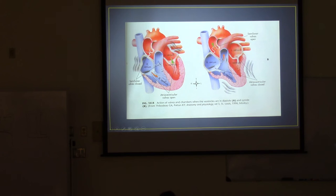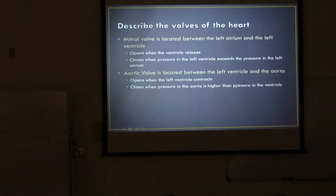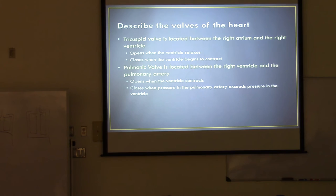One way to remember the tricuspid valve: TRI — R-I for right. A student mentioned the mnemonic 'try before you buy' — the tricuspid is on the right, the bicuspid (mitral) is on the left. Next is the pulmonic valve, located between the right ventricle and the pulmonary artery.